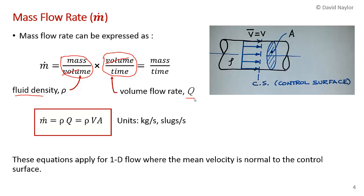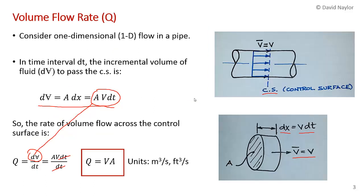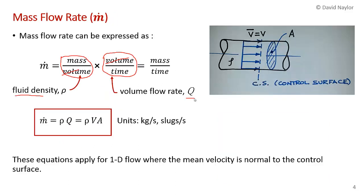We'll be using both of these equations — Q equals VA and m-dot equals rho VA — extensively in this course. But you should keep in mind that these equations apply only for one-dimensional flow, where the mean velocity is normal to the control surface.